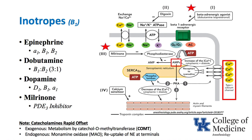Classic inotropes include epinephrine — which works via multiple receptors, with its beta-1 effects being the focus for inotropy — dobutamine with beta-1 and beta-2 effects, dopamine with D1, B1, and alpha-1 receptors where at mid-dose range we focus on beta-1 effects, and milrinone, not a beta-1 agonist but an inodilator, specifically through phosphodiesterase type III inhibition and inhibiting the breakdown of cyclic AMP.